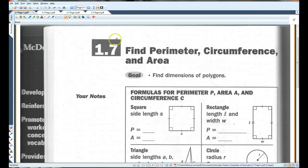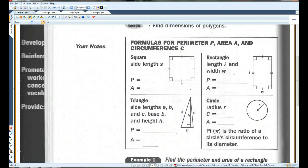Alright, you guys, if you could please turn to 1.7, perimeter, circumference, and area. We're going to be going over some formulas. Most of these formulas are probably already familiar to you, but if not, that's alright.